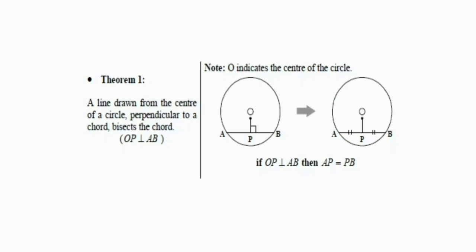In today's lesson we're going to be looking at Theorem 1 exercises. Theorem 1 states: a line drawn from the center of a circle perpendicular to the chord bisects the chord. That is to say, if we draw a line from the center that is perpendicular to the chord it intersects, then the chord will be bisected into two equal halves, meaning AP will be equal to PB.